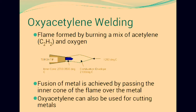Oxygen and acetylene can also be used for cutting metals. When we are using oxyacetylene welding, it also melts the metal which we are using. So it is also used for cutting purposes. Shielded metal arc (stick) welding: an arc is generated between a coated electrode and the base metal.